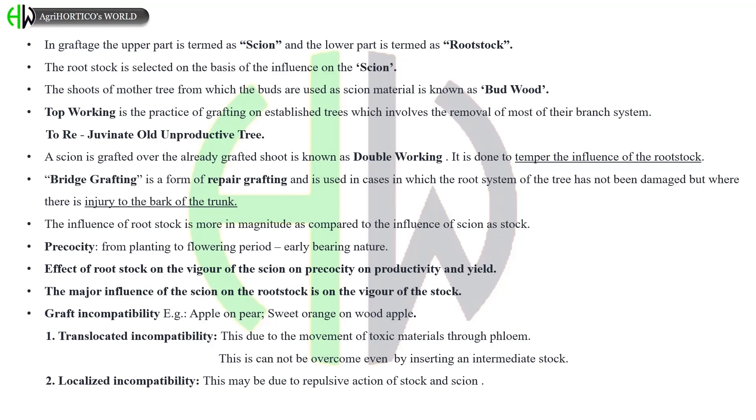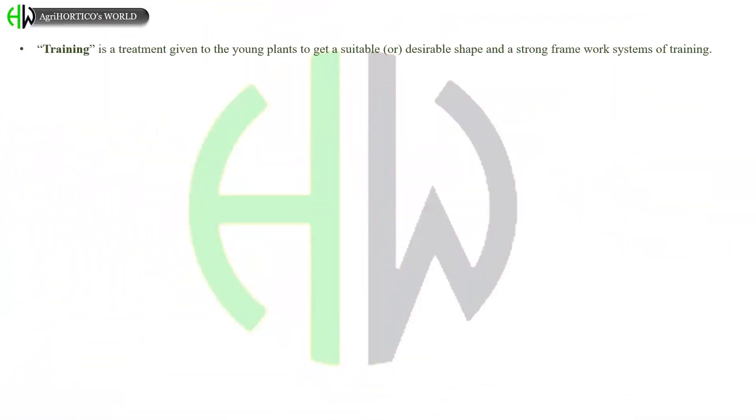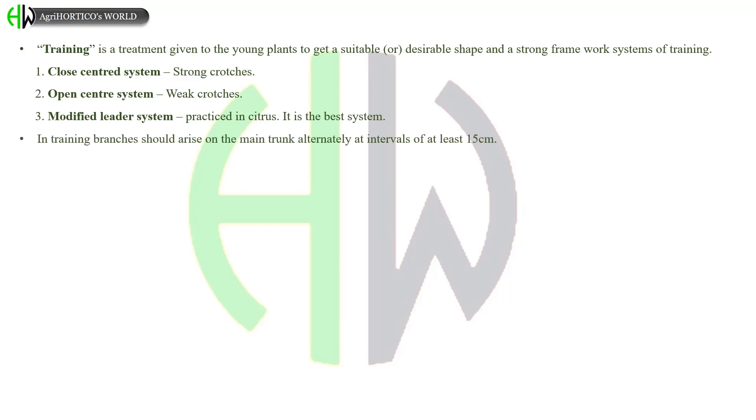Let us see about training. Training is a treatment given to the young plants to get a suitable or desirable shape and a strong framework systems of training. There are three types: close centered system, weak crotches; open center system, weak crotches; and modified leader system, practiced in citrus. It is the best system. In training, branches should arise on the main trunk alternately at intervals of at least 15 centimeters.